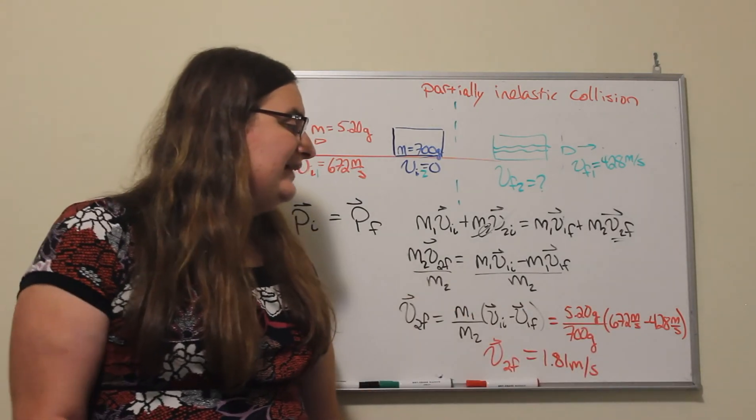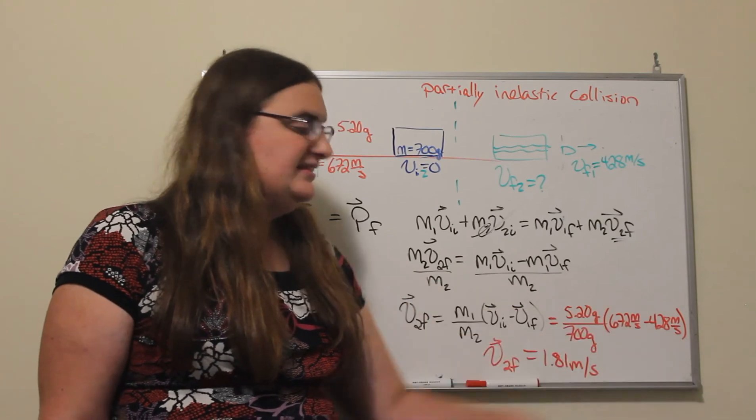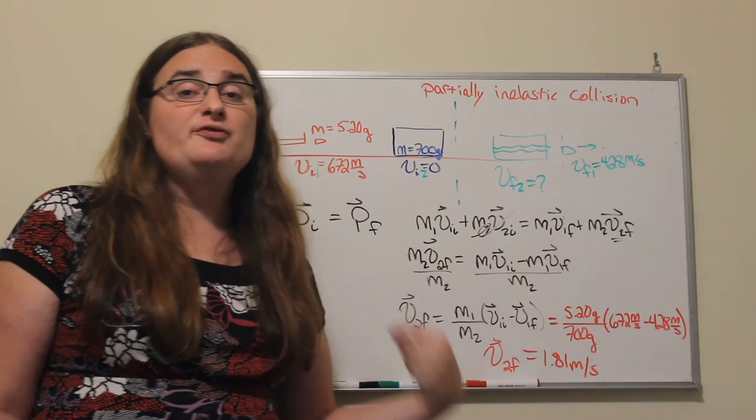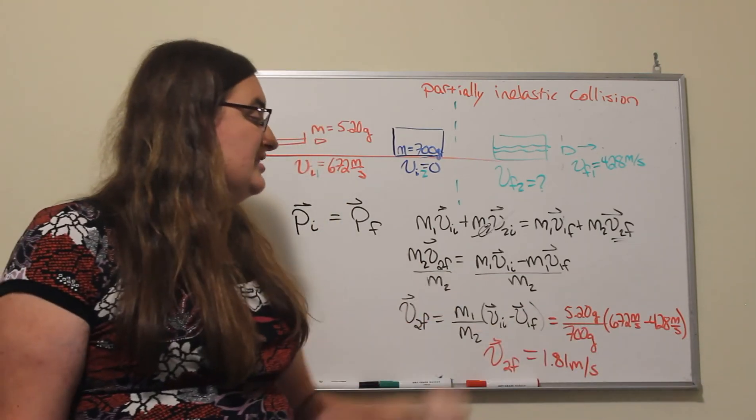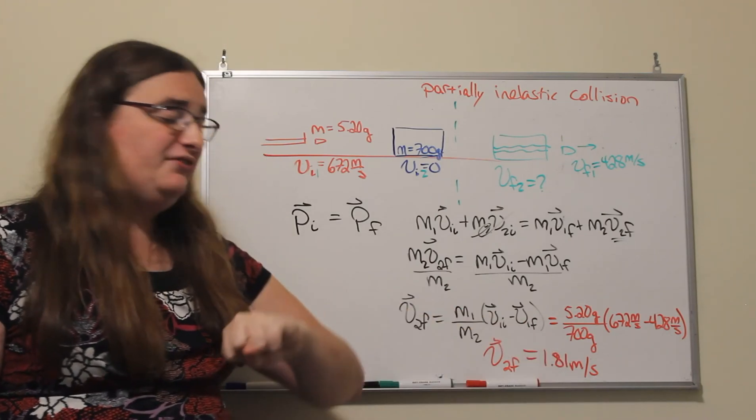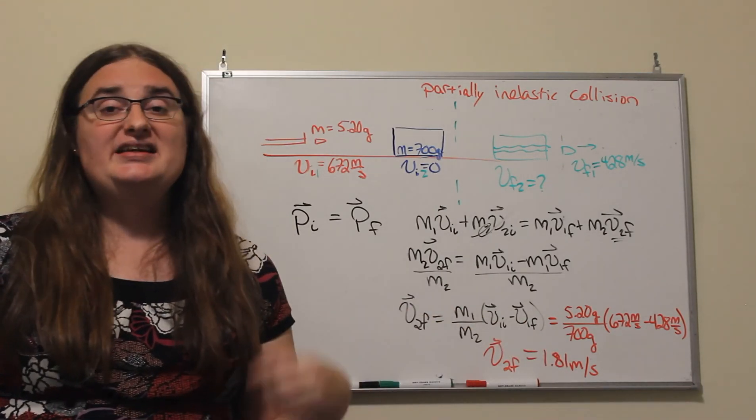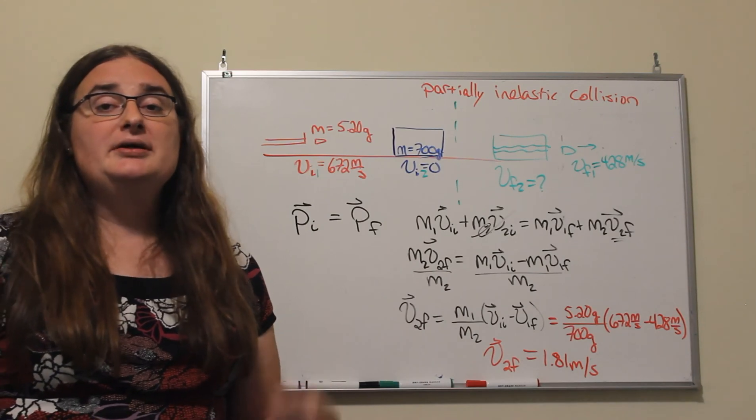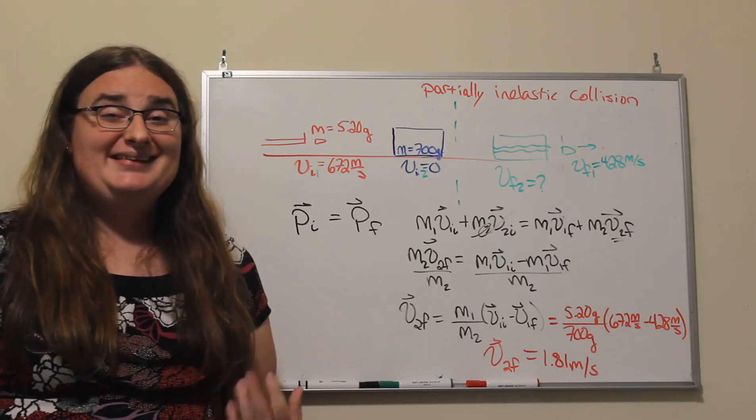That gives us a change in velocity of 244 meters per second times 5.2 divided by 700, which gives us a final velocity of 1.81 meters per second. Thanks for watching.